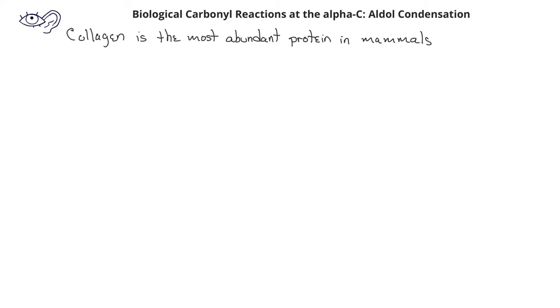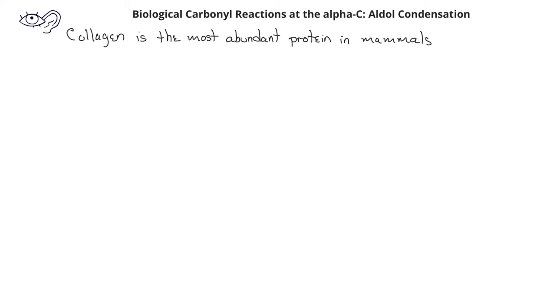Individual collagen molecules can be isolated only from the tissues of young mammals. As mammals age, the individual collagen molecules become cross-linked or bonded together, which is why meat from older animals is tougher than meat from younger animals.